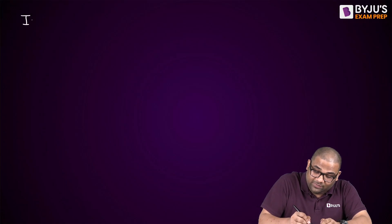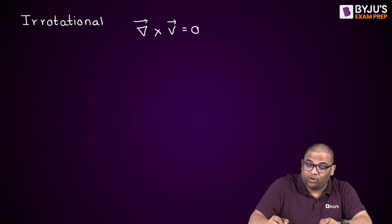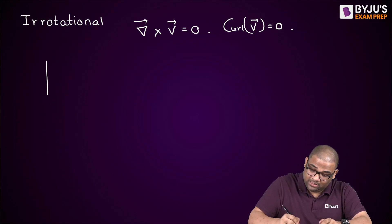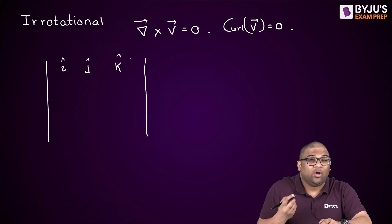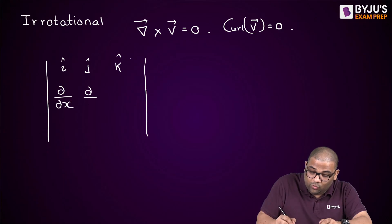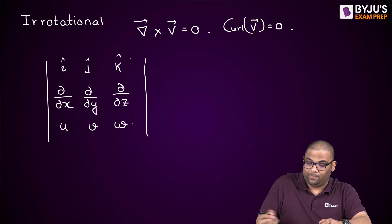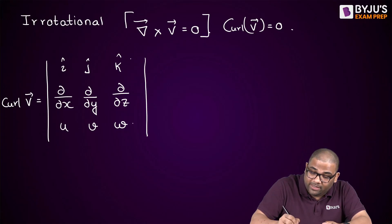Now, for checking irrotational flow — that is also very easy. A flow is irrotational when the curl of the velocity is zero, i.e., ∇ × V = 0. The curl is the cross product. I write it as the determinant with rows: (î, ĵ, k̂), (∂/∂x, ∂/∂y, ∂/∂z), and (u, v, w).